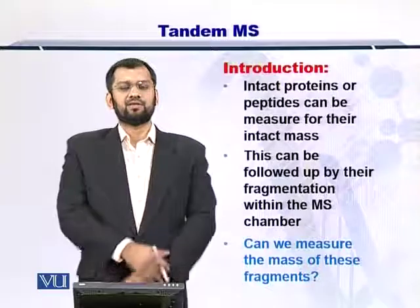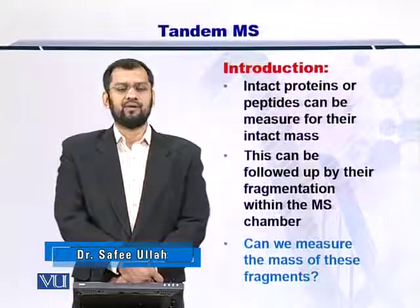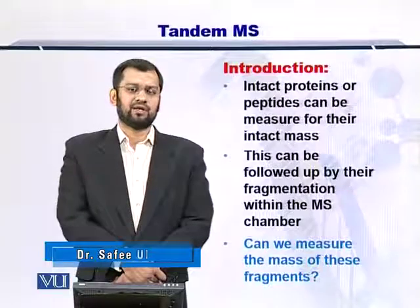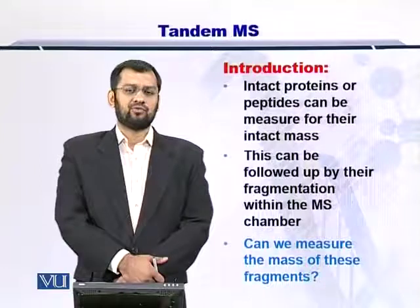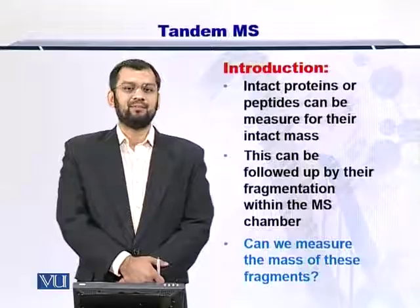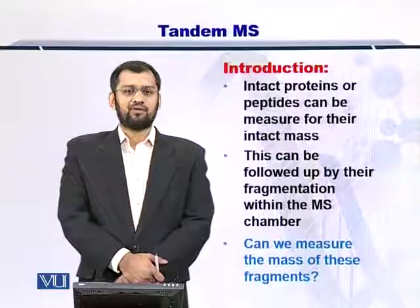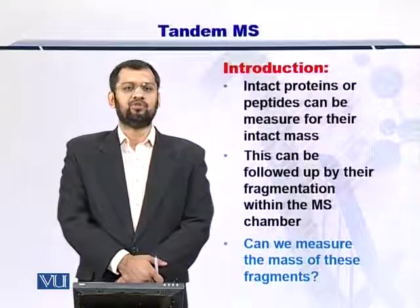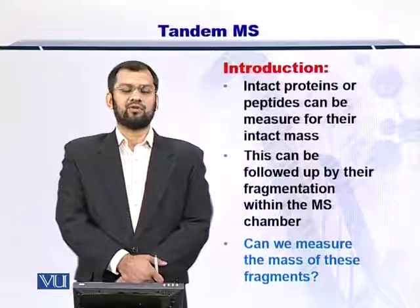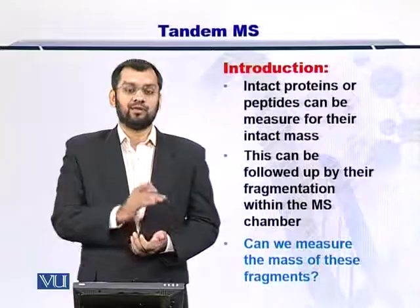As just mentioned, the intact proteins or intact peptides were measured using MS1 and then they were scored for a match with the database proteins. However, if the identity was still unclear, then you can have this follow-up tandem MS step. For tandem MS, what is very important is that you need to fragment the protein. There are different strategies to fragment the proteins and peptides within the mass spectrometer's chamber, and these are very essential for tandem MS.